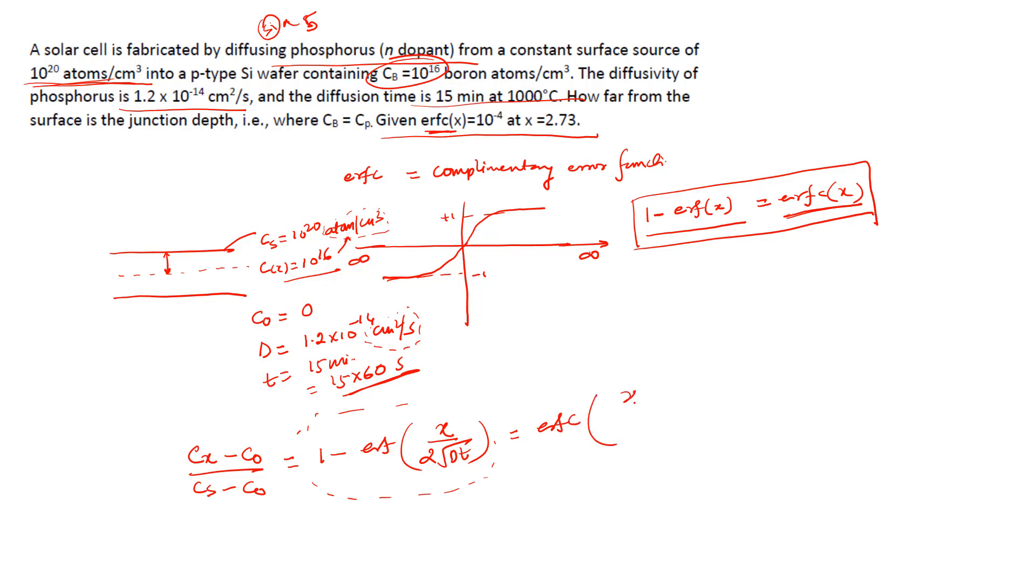C(x) is 10¹⁶ - 0, and Cs is 10²⁰ - 0, equal to erfc(x/(2√Dt)). This will be 10⁻⁴. So this implies erfc(x/(2√Dt)) = 10⁻⁴, and this is what here it is given.